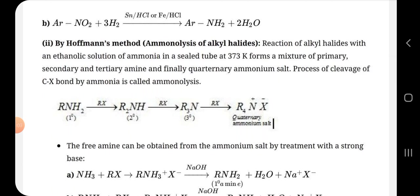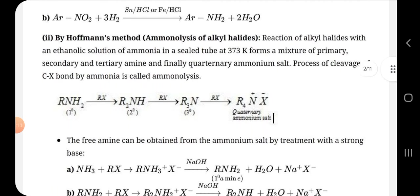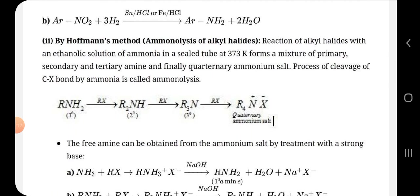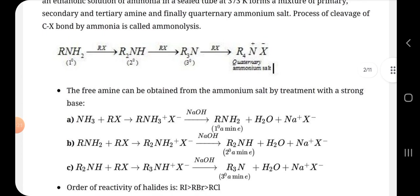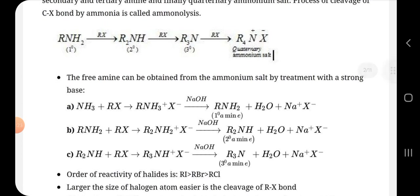In this, primary alkyl is converted to secondary, then tertiary, and then quaternary ammonium salt. And then it is reacted with tertiary amine and a haloalkane, then it gives primary amine.